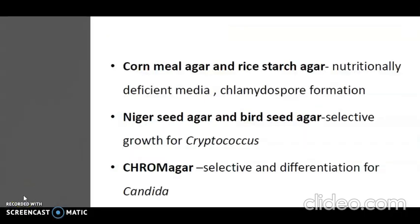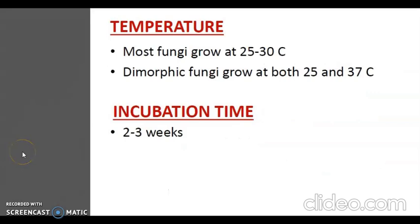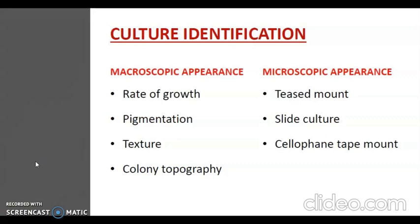Cornmeal agar and dry starch agar are nutritionally deficient media used for chlamydospore formation. Niger seed agar and bird seed agar are used for the selective growth of Cryptococcus. Chromo agar is used for the differentiation of Candida. Most fungi grow at 25–30°C, whereas dimorphic fungi grow at both 25°C and 37°C, with an incubation time of 2–3 weeks. Growth characteristics useful for identification include rapidity of growth, color, morphology, pigmentation, texture, colony topography, and microscopic appearance including hyphae, spores, and other structures using teased mount or slide cultures.